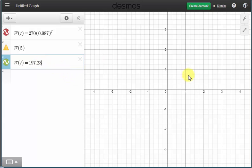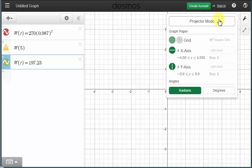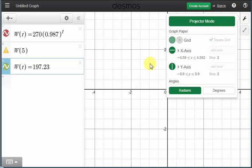But to see the point of intersection, we do have to adjust the window or the scaling on the x and y axes. So we'll press this wrench here for the graph settings. Let's also click on projector mode, which makes things easier to see.